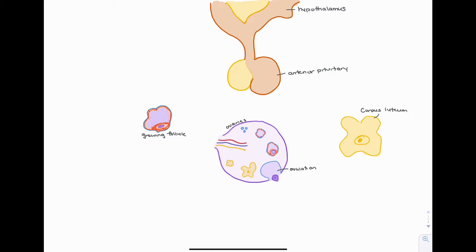The first hormone we're going to look at is GnRH, or gonadotropin releasing hormone. This hormone is produced in the hypothalamus and uses the hypophyseal portal system in order to stimulate release of hormones from the anterior pituitary gland. GnRH is created in the hypothalamus and travels down the blood supply towards the anterior pituitary gland, where it will stimulate release of FSH and LH.